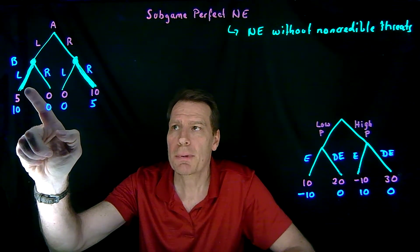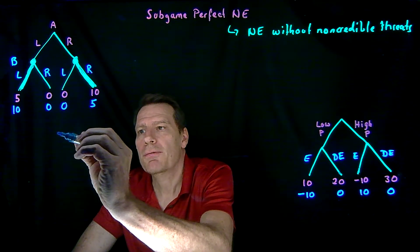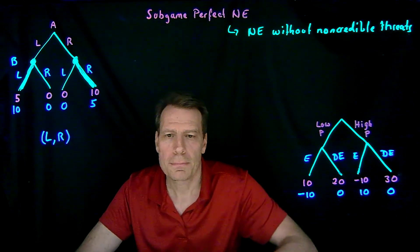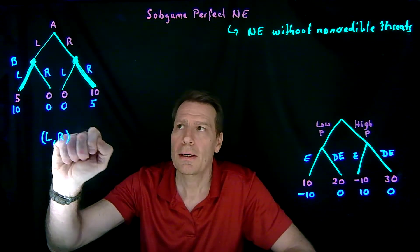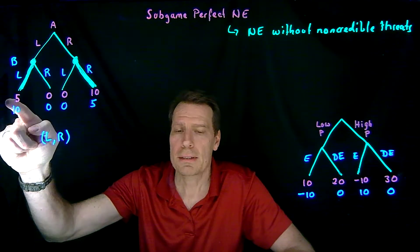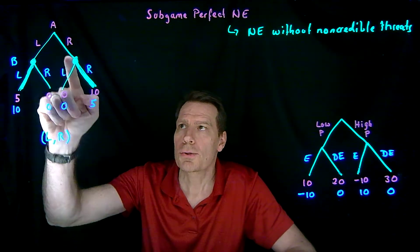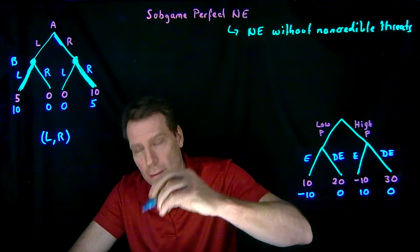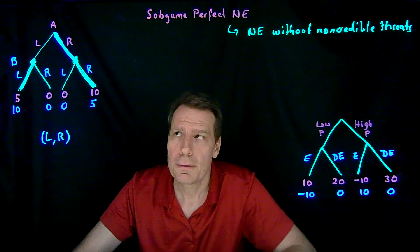So we've just come up with a subgame perfect strategy for the British player. That strategy says go left from the first node and go right from the second node. Then we go up the tree to the American, and we say the American realizes what's going to happen later. The American knows that by going left he'll end up at one outcome, and if he goes right he'll end up at another outcome. So 5 is worse than 10, so he should go right. The subgame perfect strategy for player A would then be to go right.